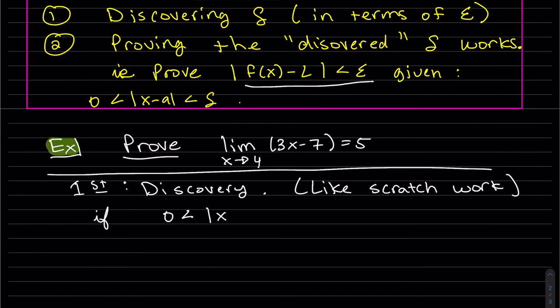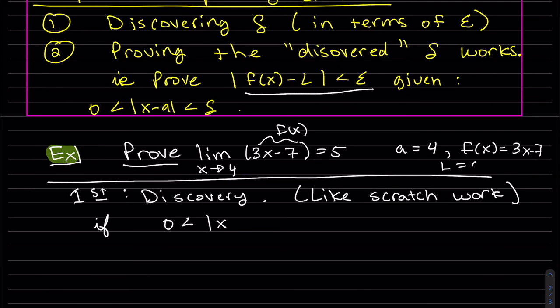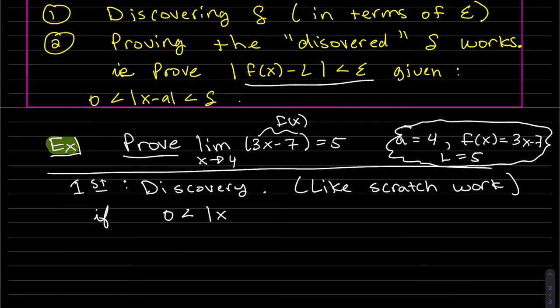So it's x minus a. Here, x approaches 4, so a = 4. This is my f(x). My f(x) = 3x - 7. And last but not least, my L = 5. So it's |x - a|, |x - 4|, remember those are close, is less than delta.